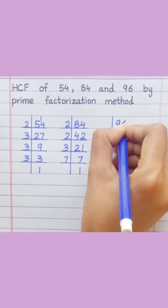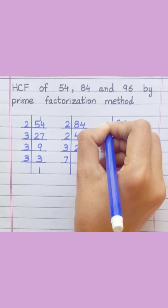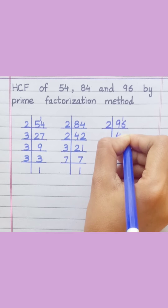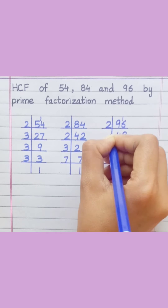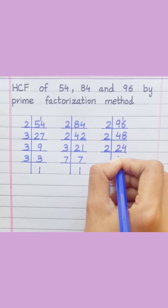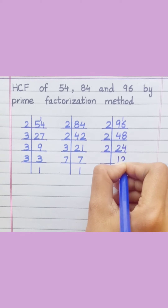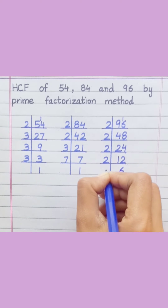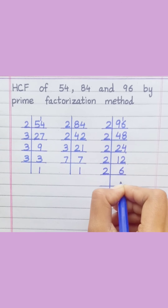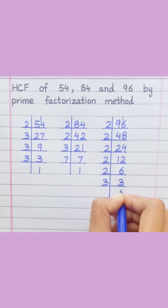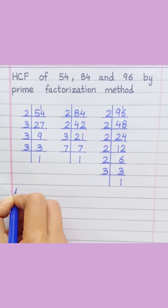96: 2 fours are 8, 2 eights are 16, 2 twos are 4, 2 fours are 8, 2 ones are 2, 2 twos are 4, 2 sixes are 12, 2 threes are 6, 3 ones are 3. 54 equals...